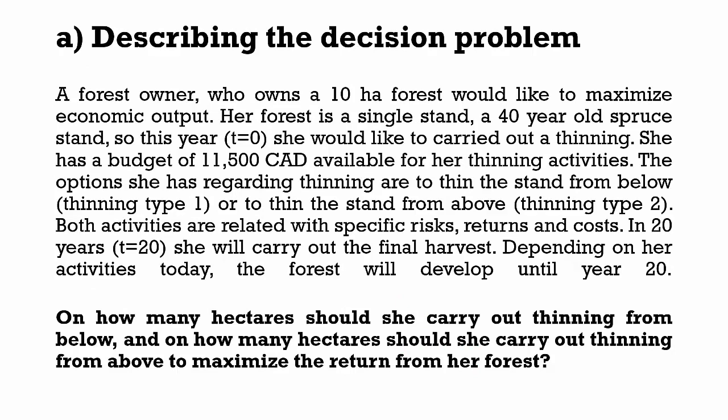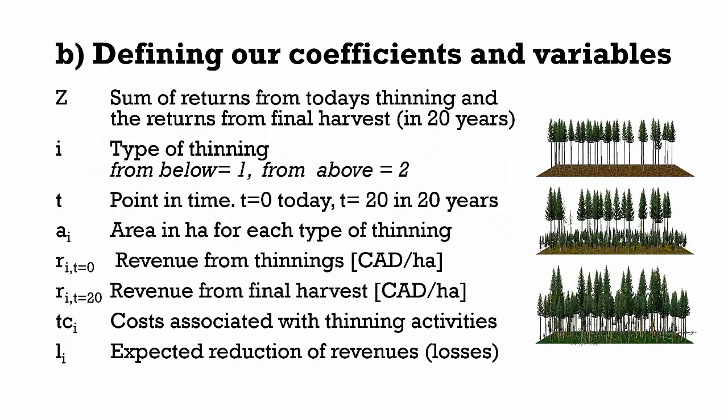The first step, describing the decision problem, is a summary of our decision problem and usually contains all the information available and necessary to find an optimum solution. In our second step, we have to define our coefficients and variables — a step that is necessary to come to a mathematical problem formulation.